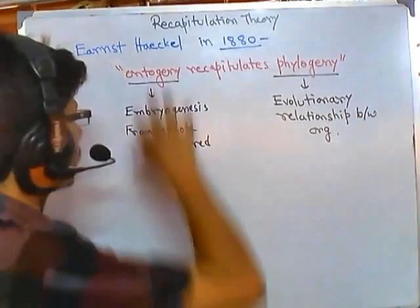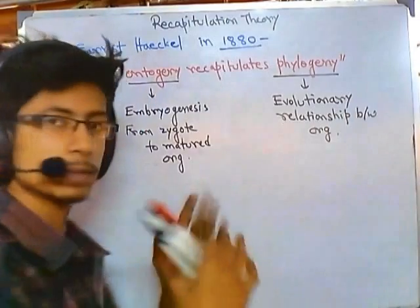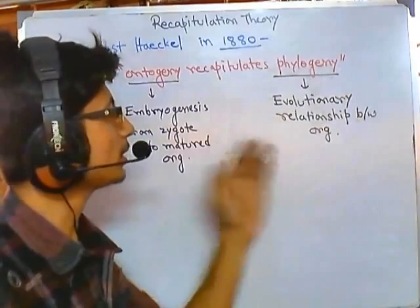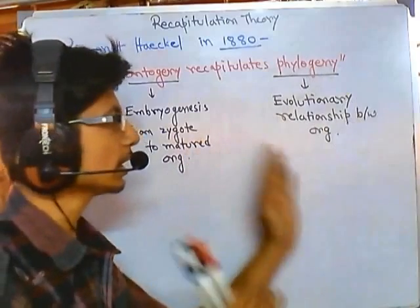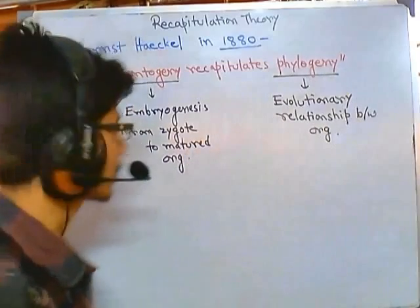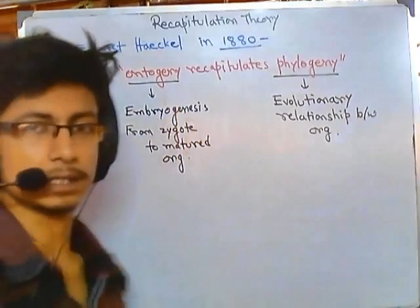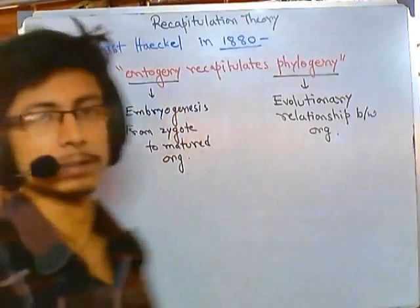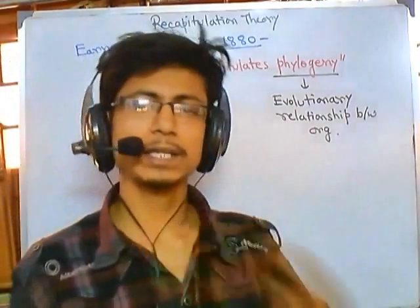Ontogeny refers to the embryogenesis process, and phylogeny refers to the evolutionary relationship between different organisms. If we look at the embryogenesis patterns — which are complicated drawings you can find in any textbook — something remarkable emerges.